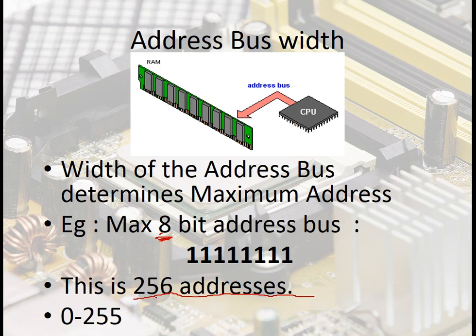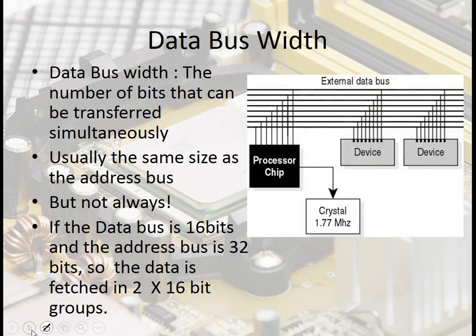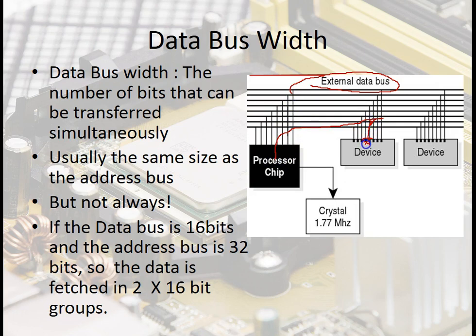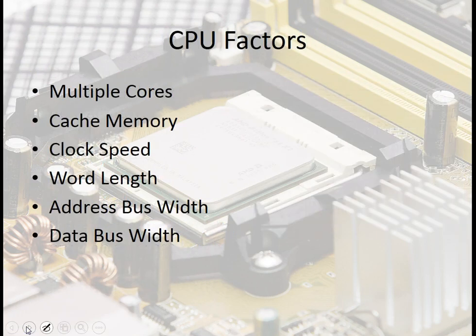Lastly, we've got data bus width — the number of bits that can be transferred simultaneously. You can see on the diagram the external data bus and how it connects to the processor. The processor puts data onto the data bus to be transmitted to and from devices.